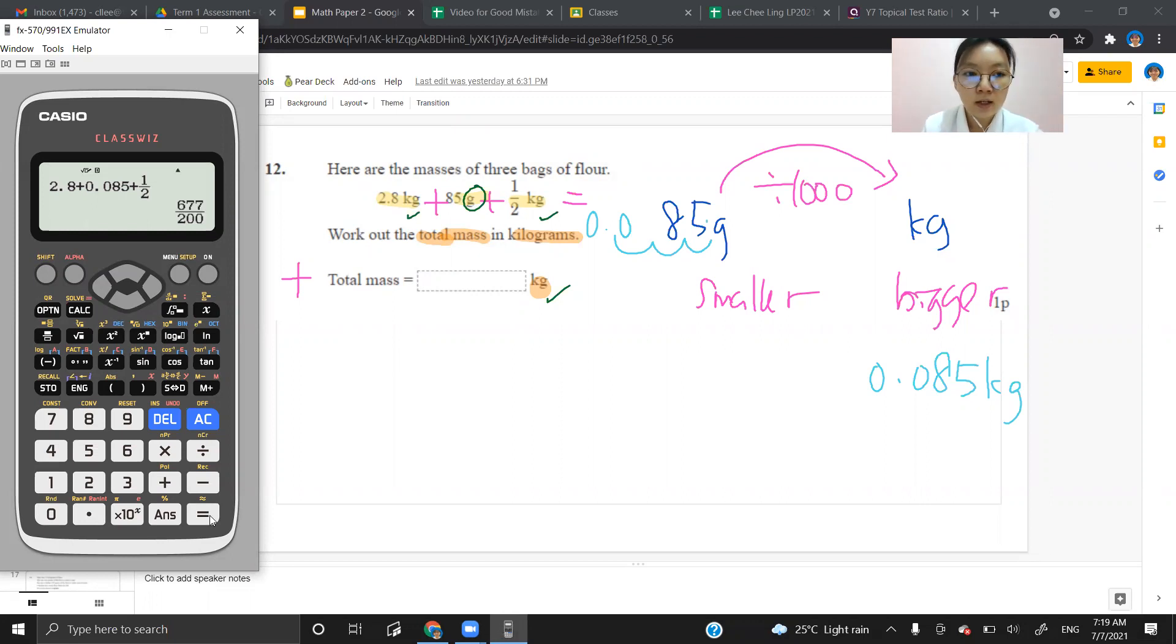And press enter. That is the answer. Try to put that in decimal by pressing this button. S interchange with D. 3.385. That is my answer.